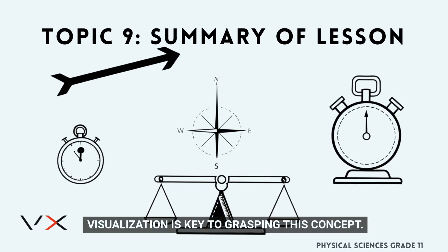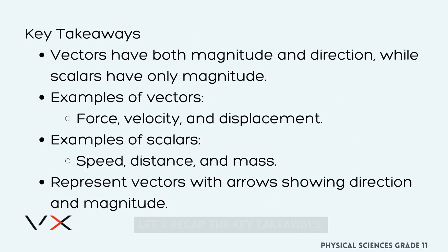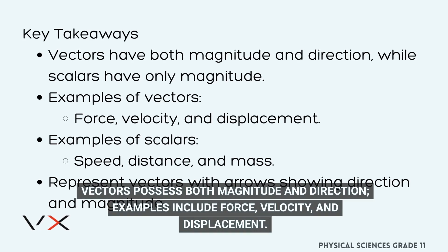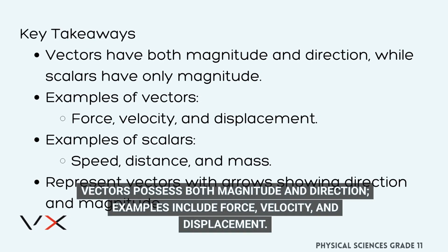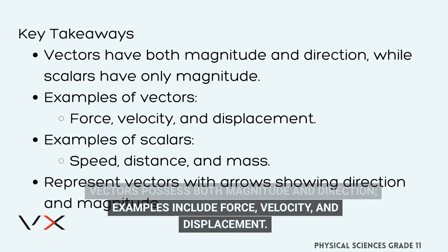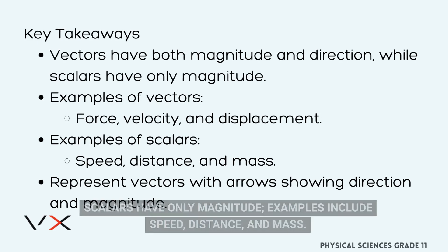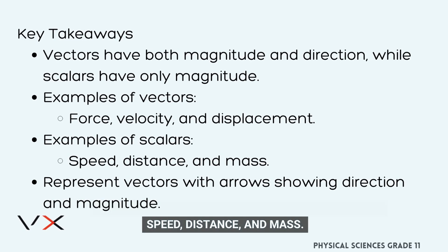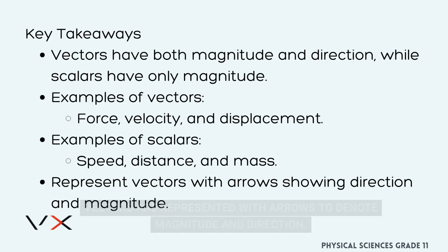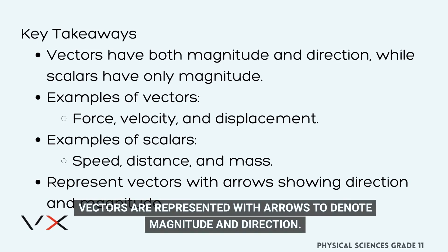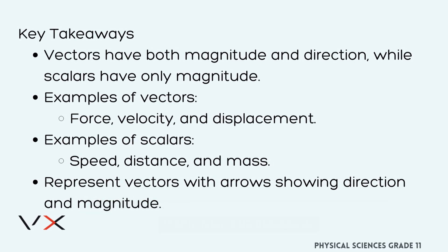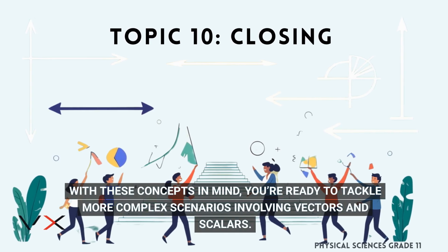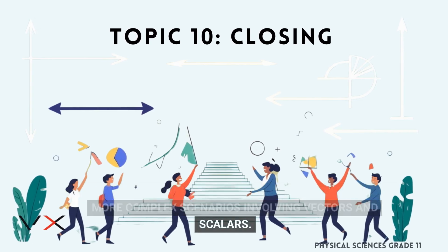Visualization is key to grasping these concepts. Let's recap the key takeaways. Vectors possess both magnitude and direction — examples include force, velocity, and displacement. Scalars have only magnitude — examples include speed, distance, and mass. Vectors are represented with arrows to denote magnitude and direction. With these concepts in mind, you're ready to tackle more complex scenarios involving vectors and scalars.